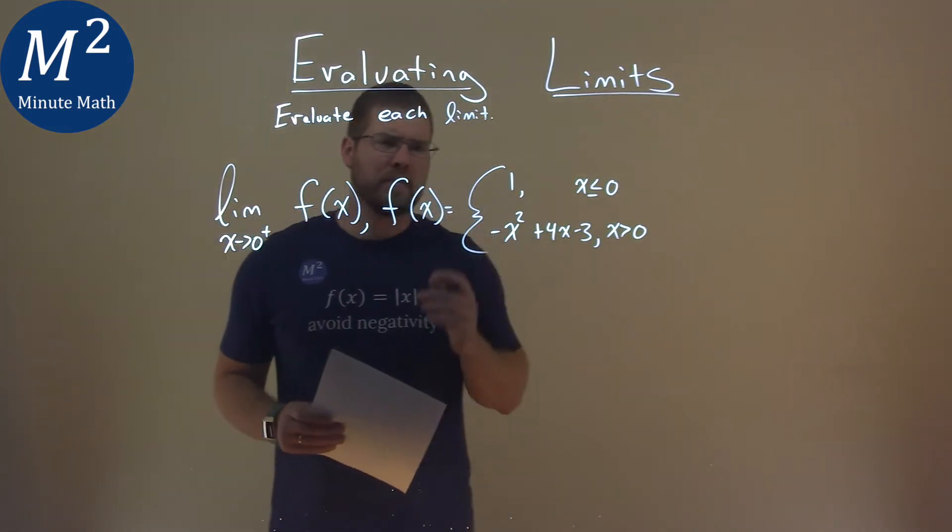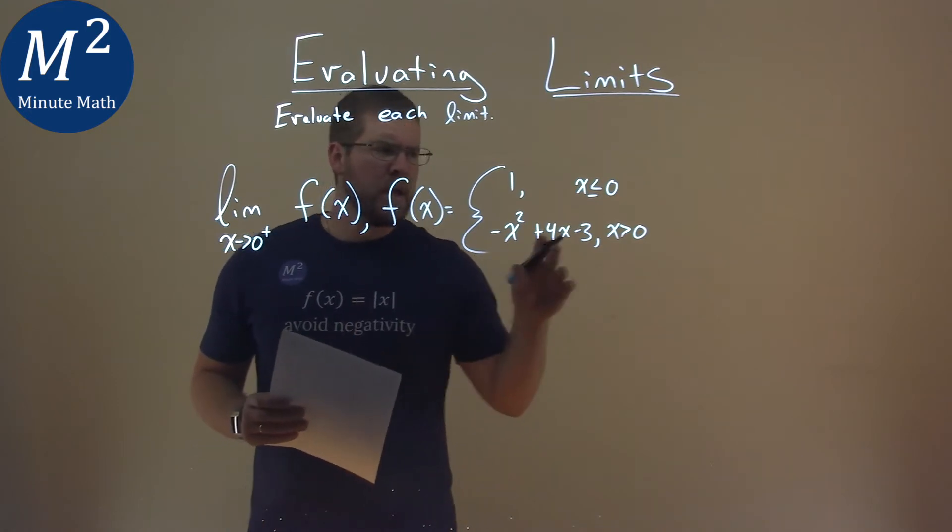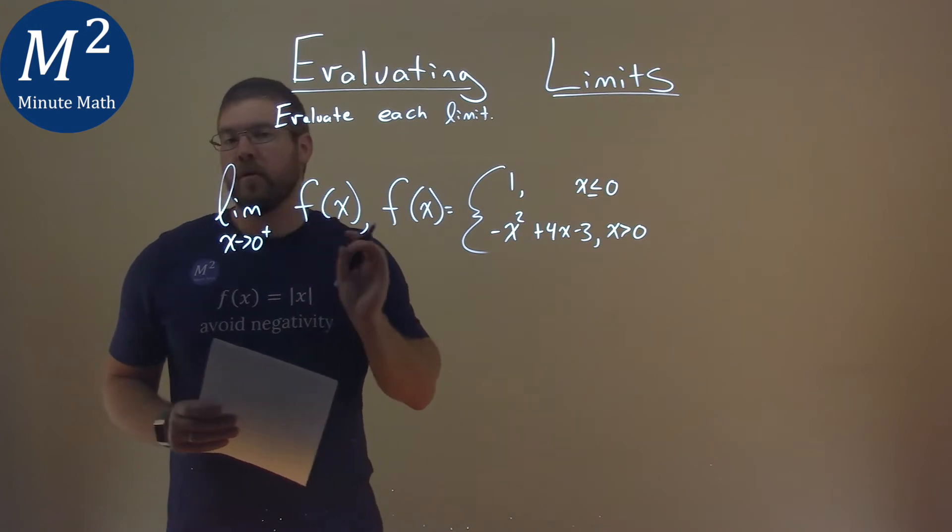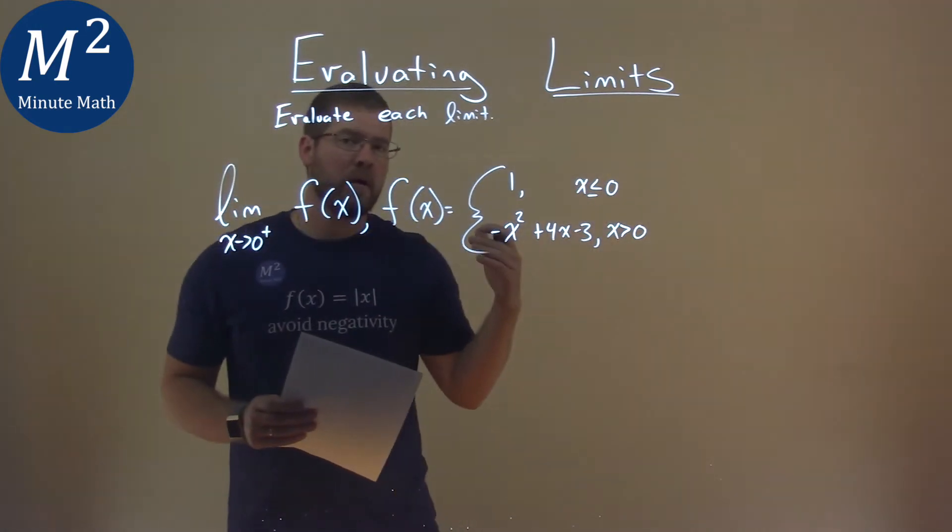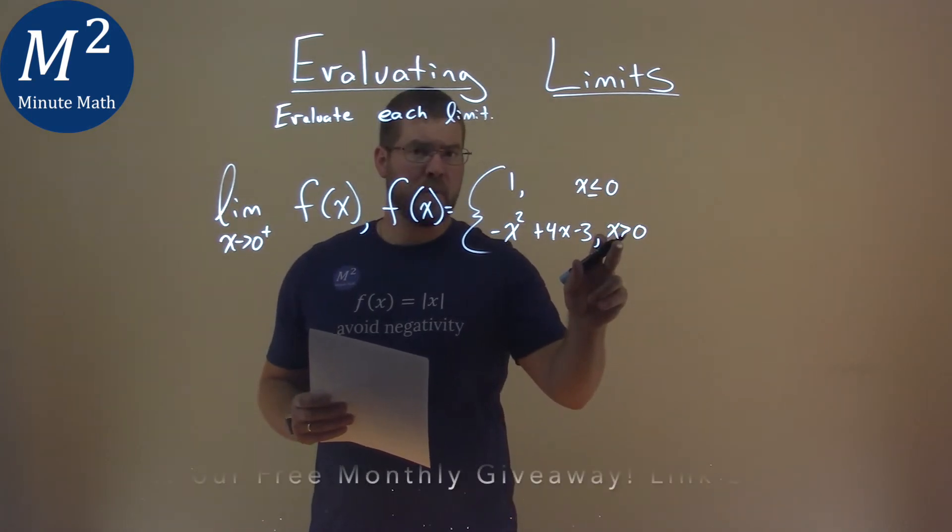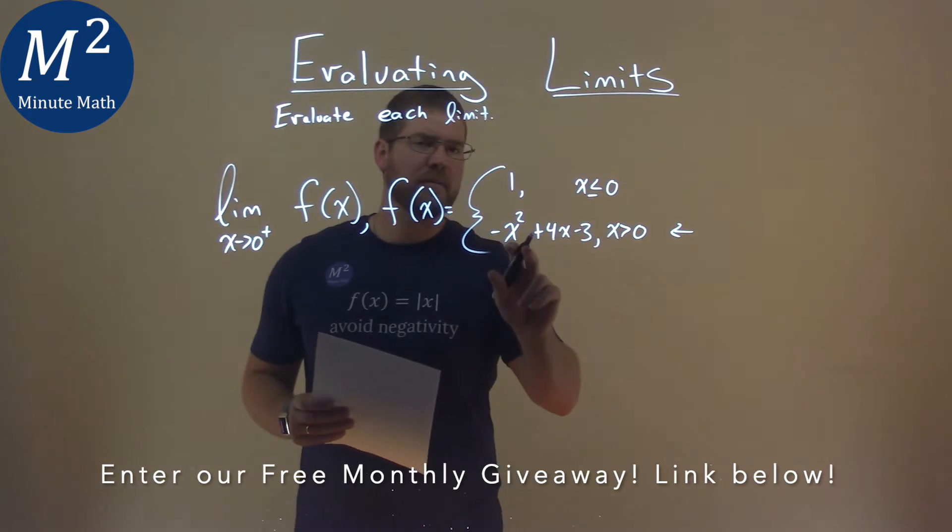Now one thing we're going to note here with this limit, we're not really given a graph or anything like that, we're going to do it without it. We want to see when x approaches zero from the right, so if we're coming from the right all the values leading up to it will be positive or greater than zero. So we're going to focus on this second equation right here.